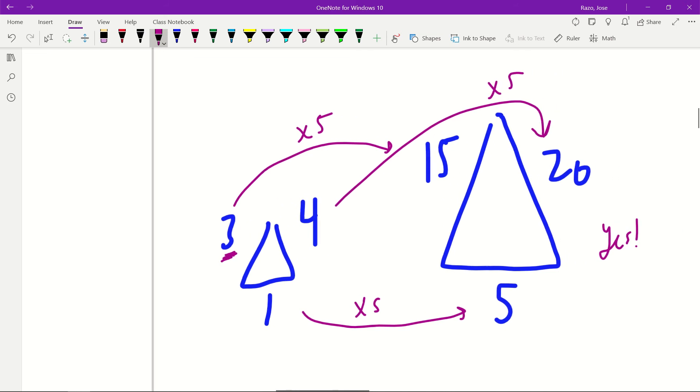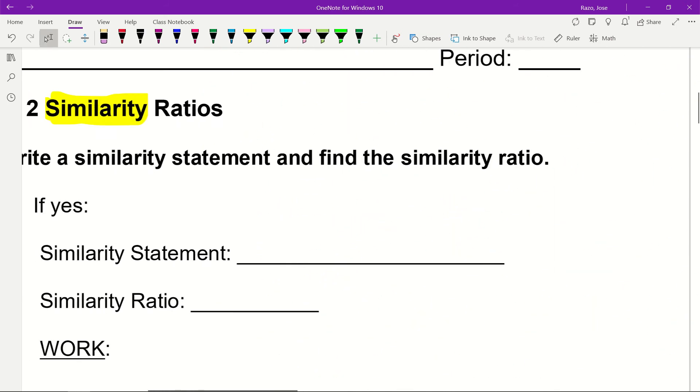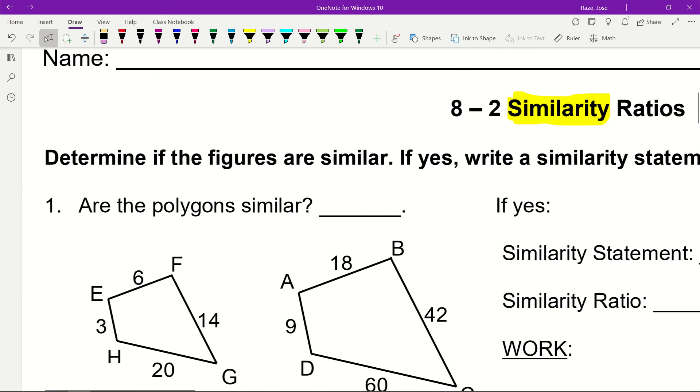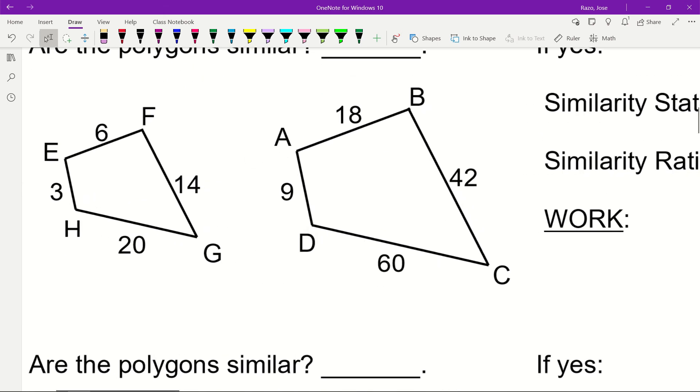When you're showing your work for 'are the polygons similar,' you have to identify which sides are corresponding and which angles are corresponding. This means which points line up with the next polygon.